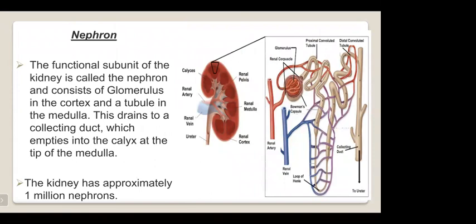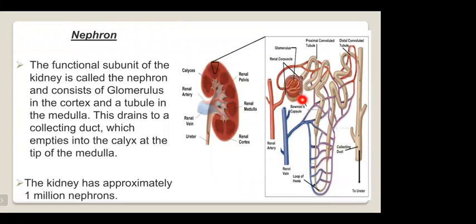The functional subunit of the kidney is called the nephron, which consists of the glomerulus in the cortex and tubules in the medulla. These drain to collecting ducts which empty into the calyx at the tip of the medulla. The kidney has approximately one million nephrons.